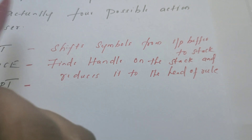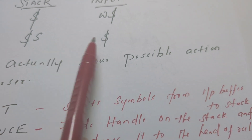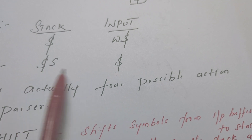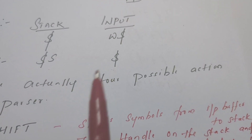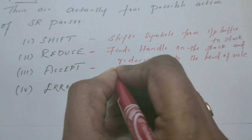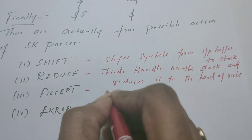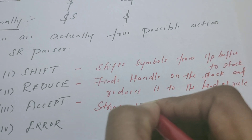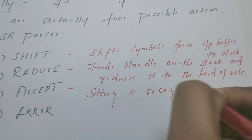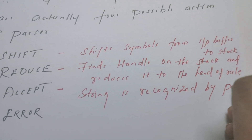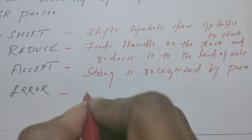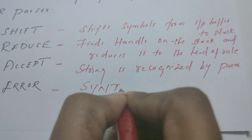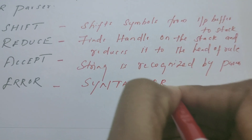Accept means when the string is completely read by the parser, if the stack contains the start symbol and the input buffer contains only dollar, the string is recognized — that is the accepting state. Otherwise it is an error. Errors recognized at this stage are generally syntax errors.